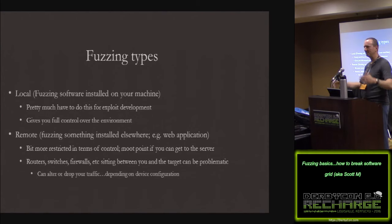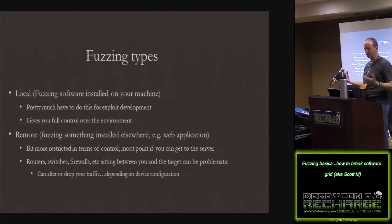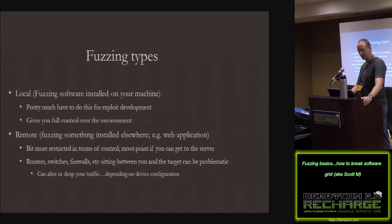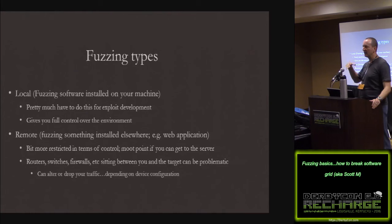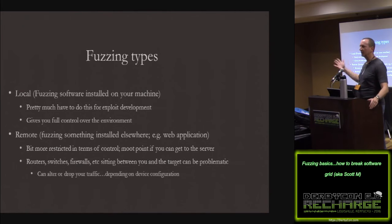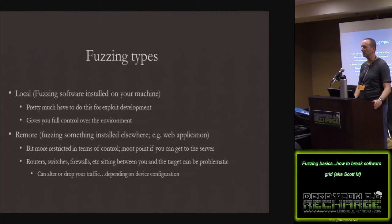Types of fuzzing. I see it as just two: local and remote. Local is fuzzing something you've got on your own machine — as far as I know, you've pretty much got to do that for exploit development. It gives you full control over the environment. Remote fuzzing is something that's installed elsewhere, like a web application. A lot of what I deal with is web applications, but it's more restricted in terms of control. Ideally, if you can get to or look at the server while you're doing your fuzzing, you can get pretty immediate feedback. But the downside is routers, switches, firewalls sitting in between can be problematic depending on how they're tuned.